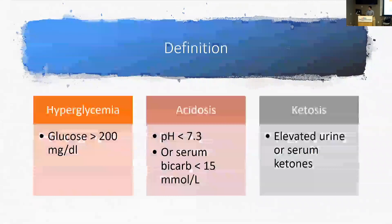There are three aspects to the definition. One is hyperglycemia, defined as a glucose higher than 200. Second is acidosis, defined as a pH of less than 7.3 or a serum bicarb of less than 15. And then finally ketosis, as defined by elevated urine or serum ketones.